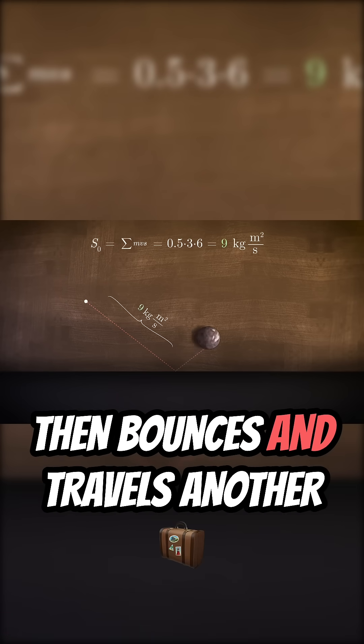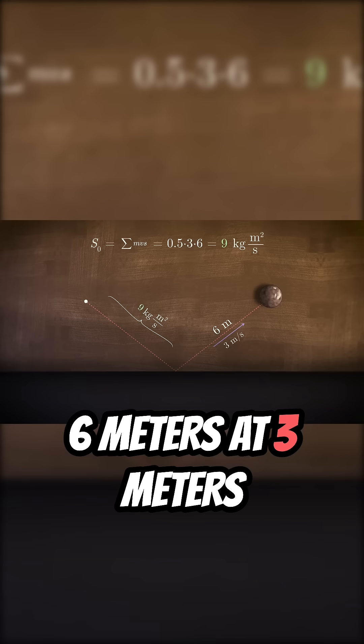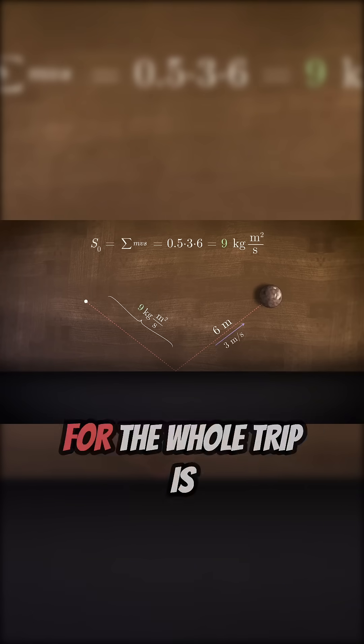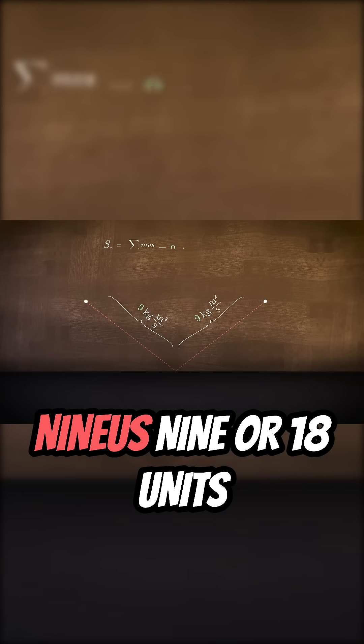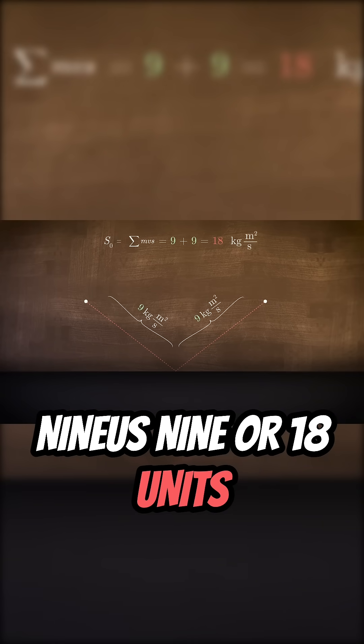If the ball then bounces and travels another 6 meters at 3 meters per second, then the action for the whole trip is 9 plus 9 or 18 units of action.